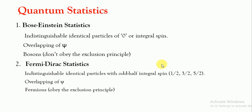Firstly, bosons have integral or zero spin, whereas in Fermi-Dirac statistics the spin is 3/2 or 5/2, meaning odd half-integral spin. Both have the similarity that the wave function psi overlaps. The key difference is that in Bose-Einstein statistics, particles do not obey the Pauli exclusion principle, whereas fermions do obey the exclusion principle.